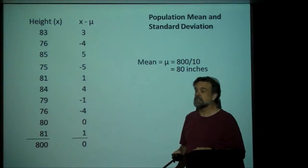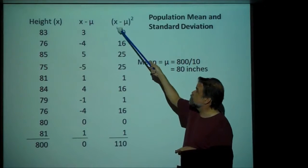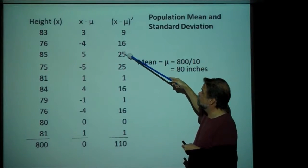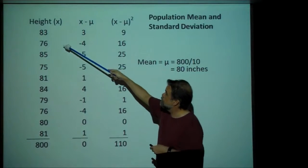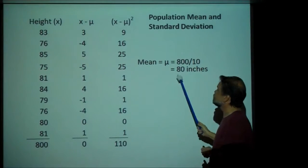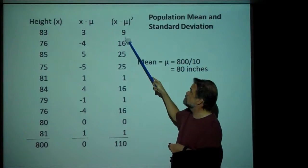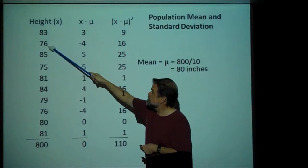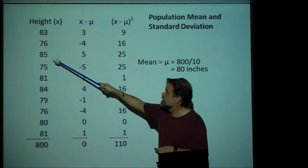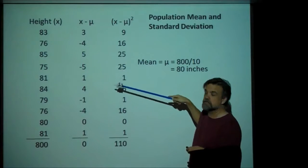So, just taking the distances and summing those up doesn't work. Instead, I can take these distances and square them — that way, they're always positive. Here are all the squared differences: our mean is 80, so 83 minus 80 gives us 3, and the square of that is 9. 76 minus 80 is negative 4, and the square of that is 16. 85 minus 80 is 5, and the square of that is 25, et cetera.